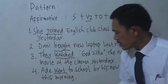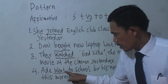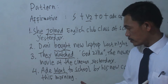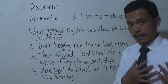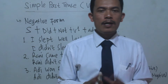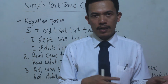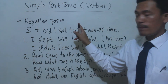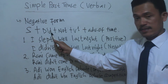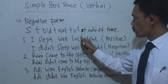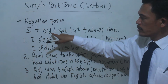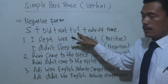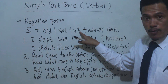We also use 'this morning' to express or show a time that happened in the past. When you want to change a sentence into negative form, you have to understand the formulation. The negative form in simple past tense is: Subject + did + not + verb 1 + adverb of time.